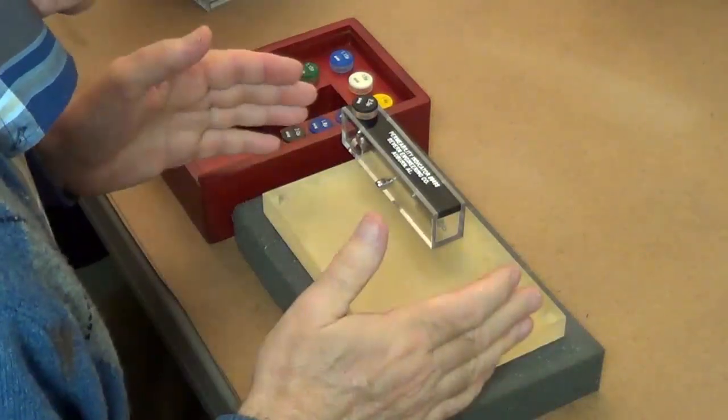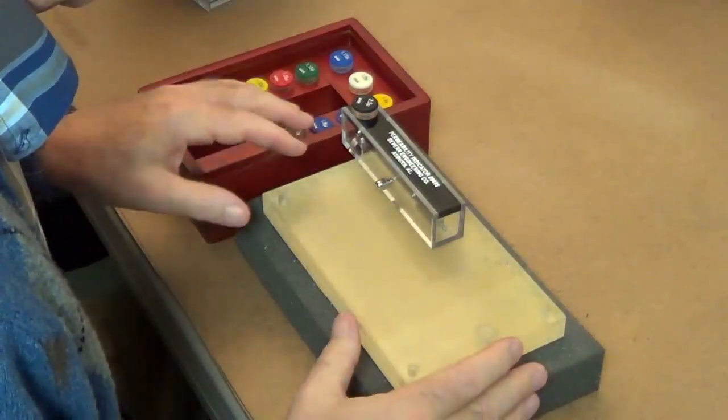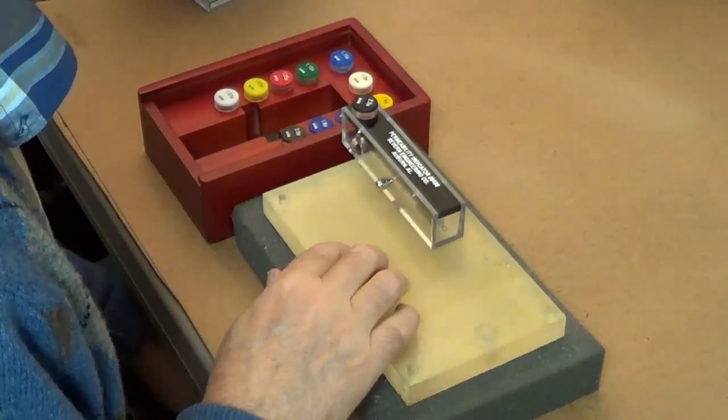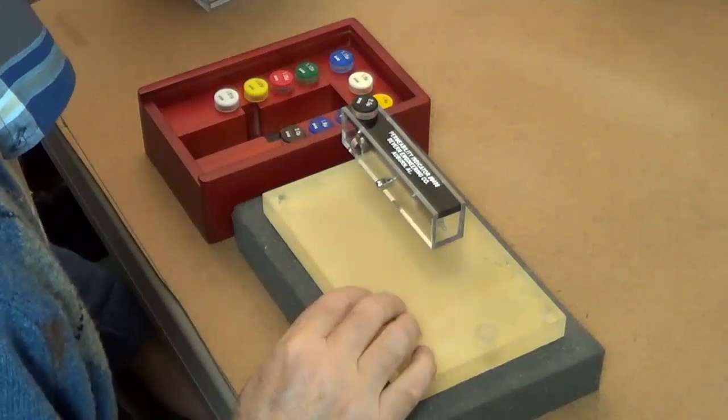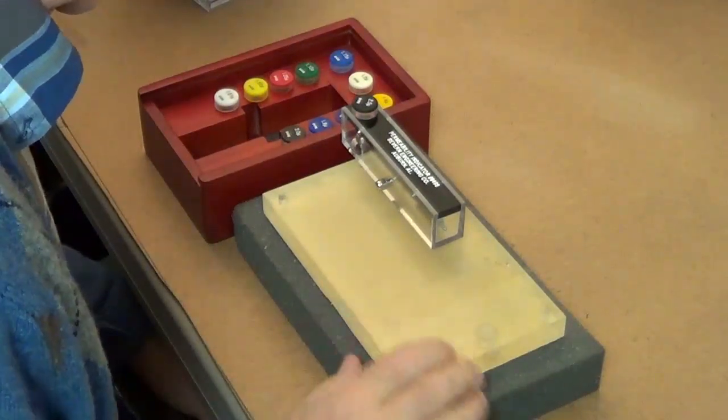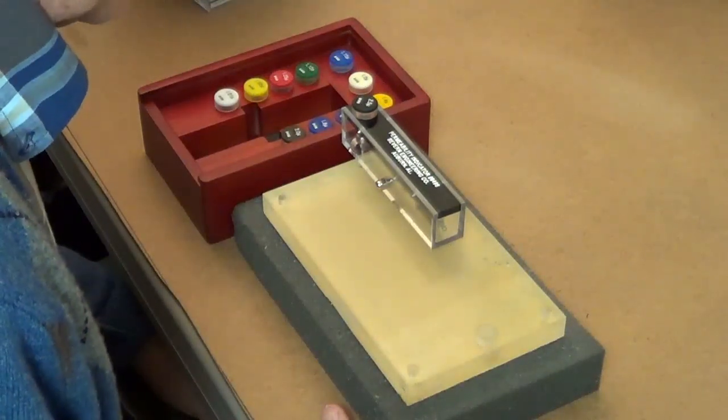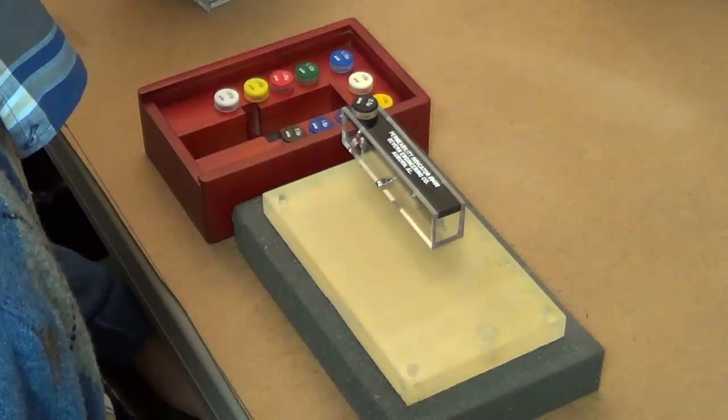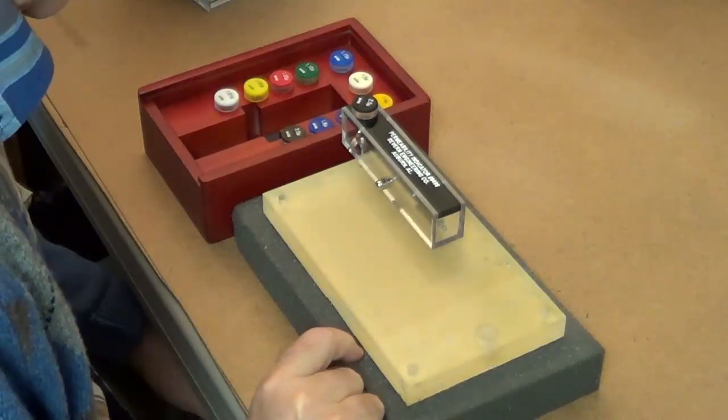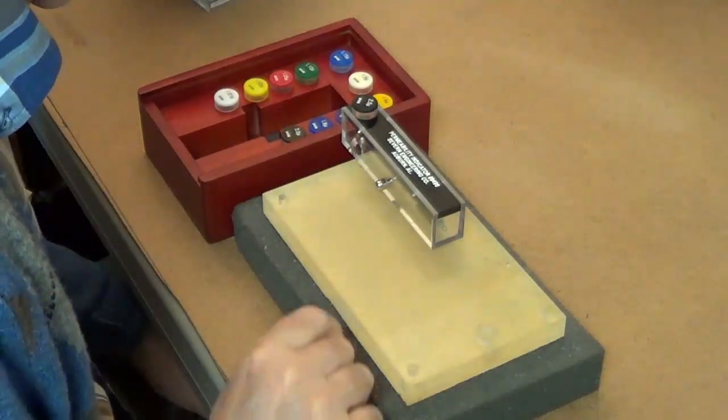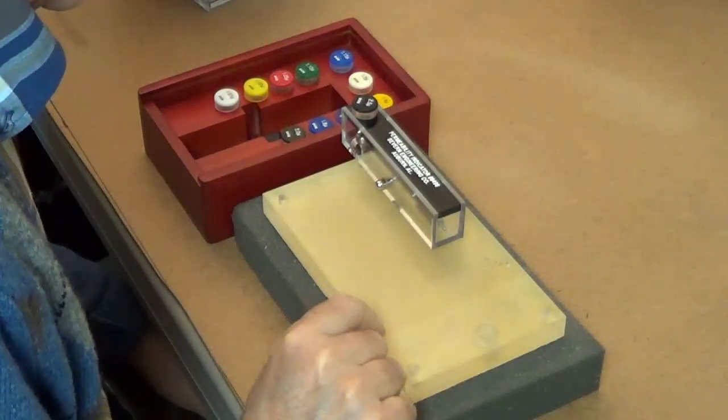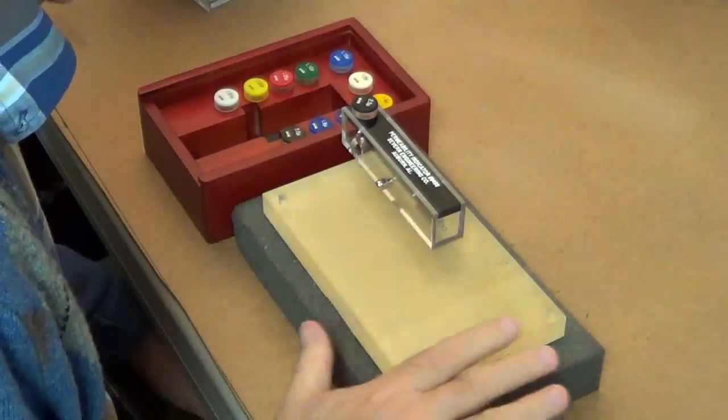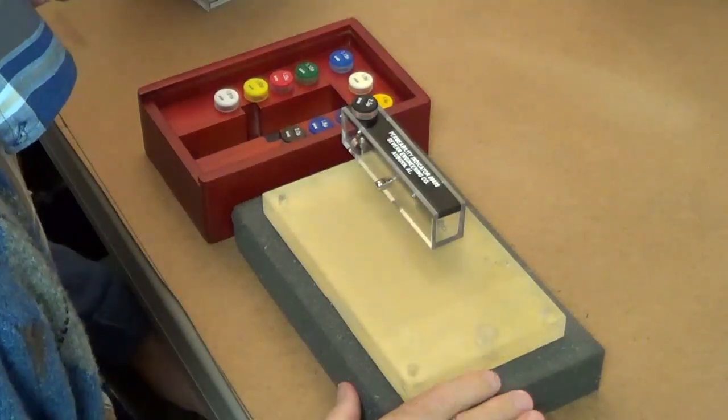Before we start talking about the test procedure, I want to talk about the testing conditions. We want to try to isolate the testing surface as much as we can from any type of magnetic material. The table I'm actually working on is a plastic table with a fiberboard, a thin fiberboard layer on top. Then I have an inch and a half thick rigid foam, and on top of that I have a three quarter inch acrylic plastic surface. So what I'm trying to do is make sure I am not near any type of magnetic material.